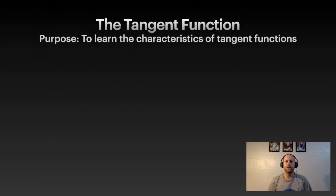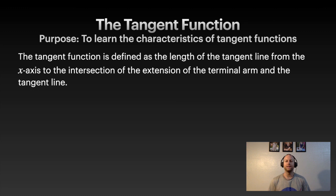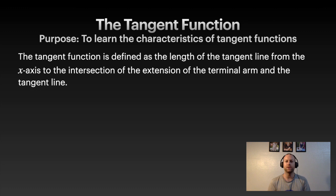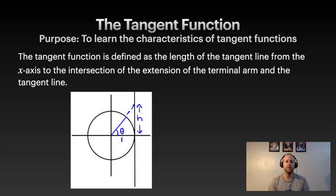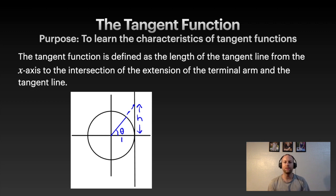First, let's look at some characteristics. The tangent function is defined as the length of the tangent line — a line that just touches a curve once. From the unit circle, a tangent line goes from the x-axis to the intersection of the terminal arm if you extended it all the way out. The vertical line marked 'h' is the tangent line to the unit circle, and the diagonal blue line is the terminal arm of whatever angle.